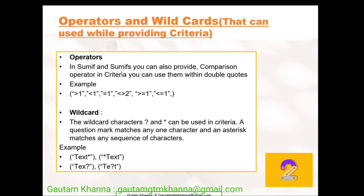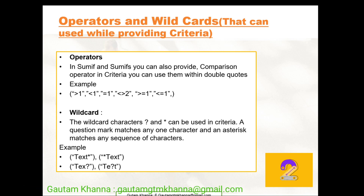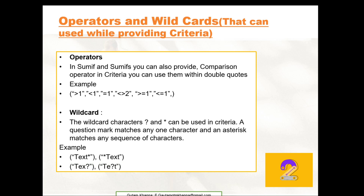Wildcard. The wildcard characters — question mark and asterisk — can be used in criteria. A question mark matches any one character, and an asterisk matches any sequence of characters. For example, you can write text then asterisk, or asterisk then text. For a question mark, you write your text in quotation marks followed by a question mark for the missing character — the question mark can even be in between, like 'te?t', which will search for all characters possible with 'te', then your missing character, and then 't' again.